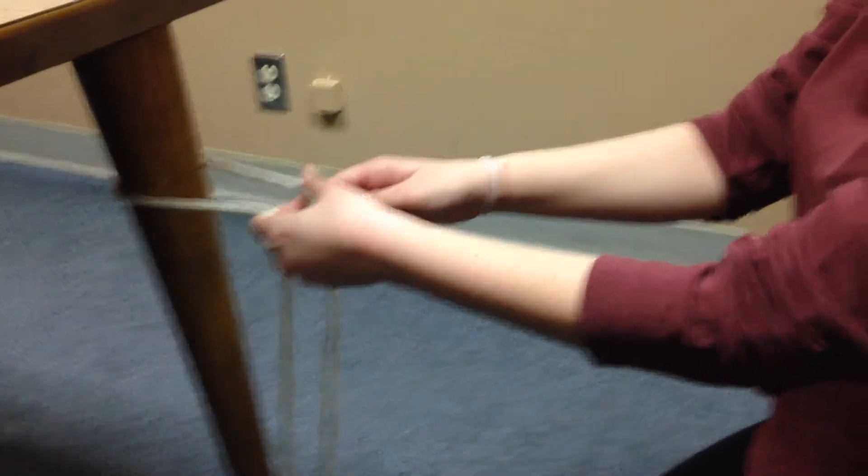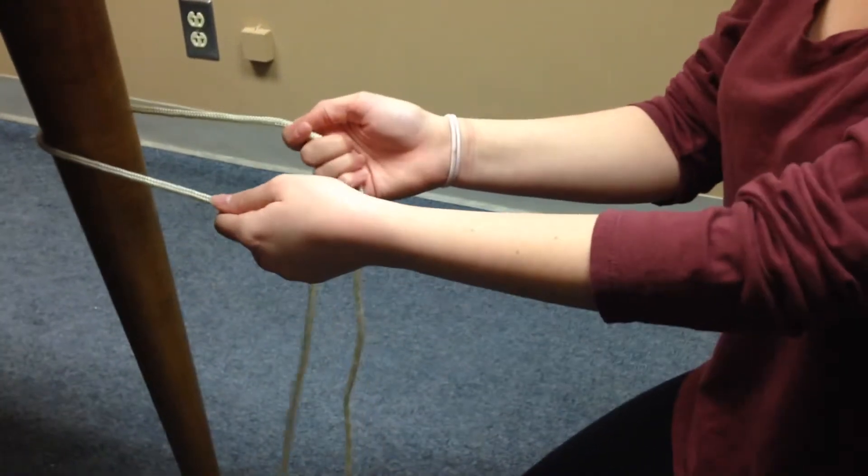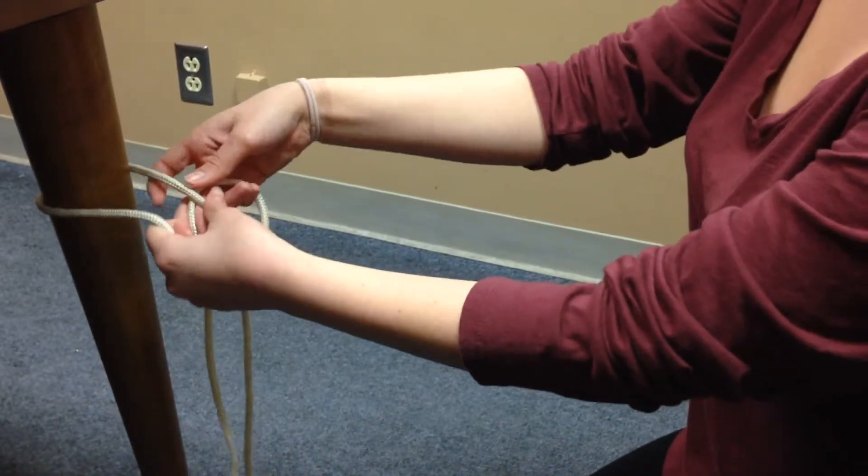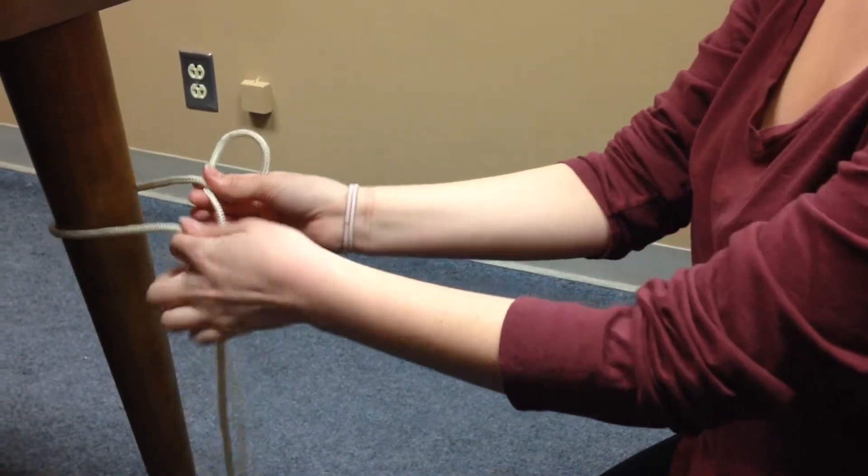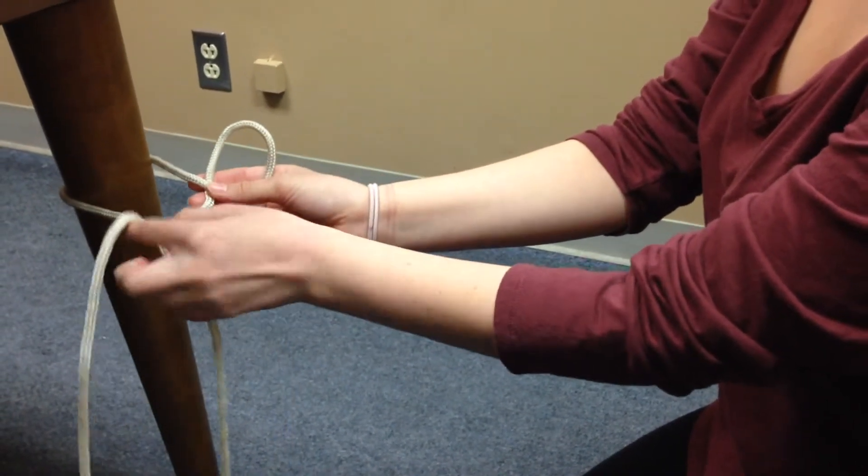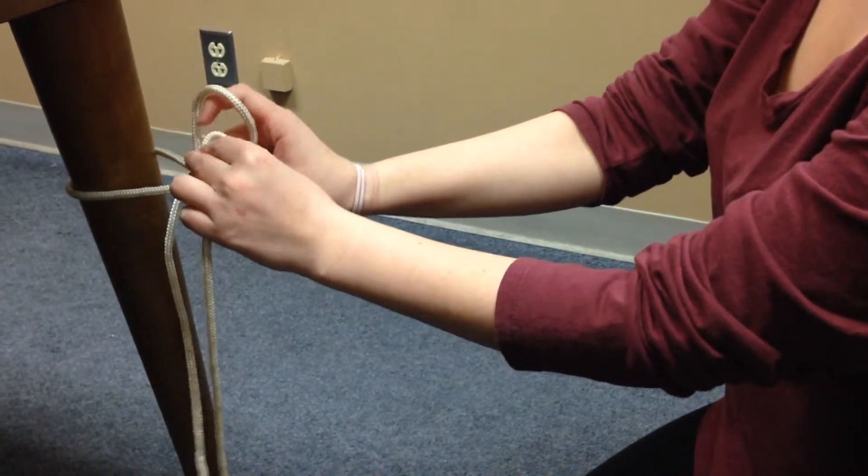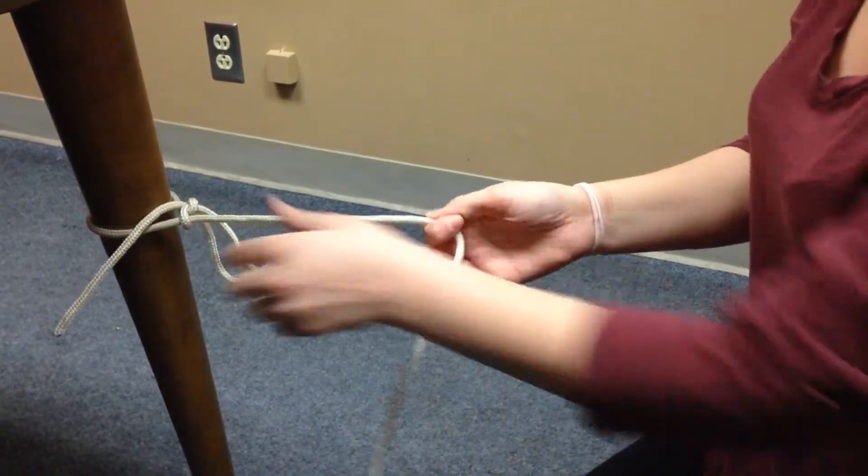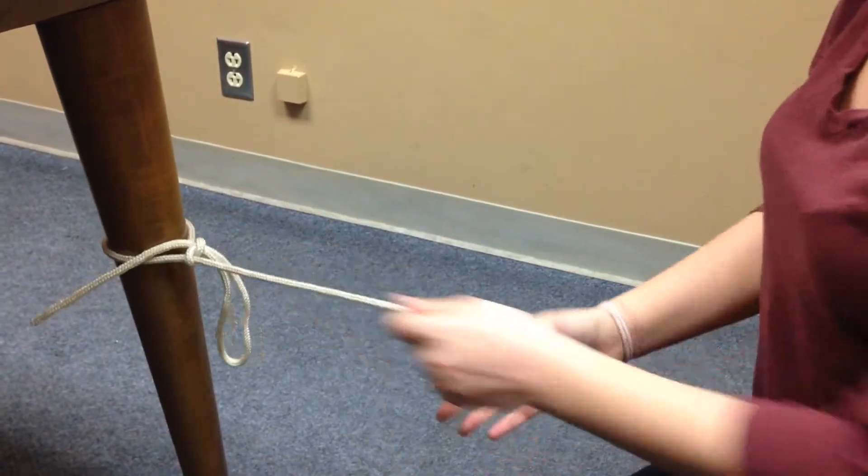For those of you who are left handed, you will do exactly the opposite, so you will make a loop on the right hand like that and bring that end under the left side, and then you will make another little loop and go through that original loop on the right and then pull tight. Hopefully that will make it easier for you if you're left handed.